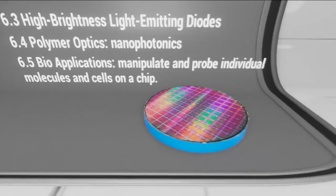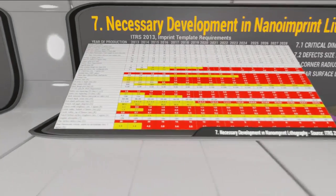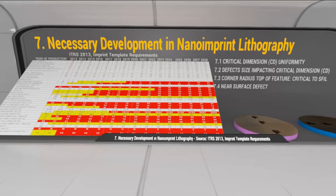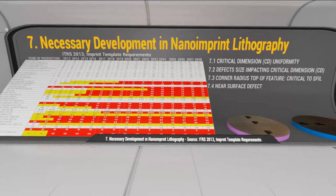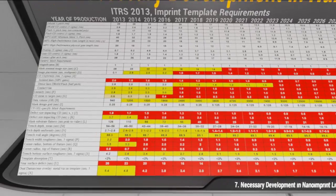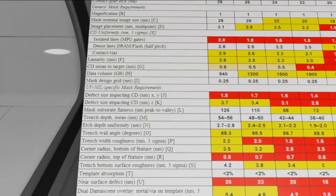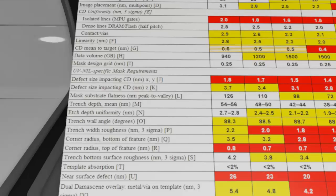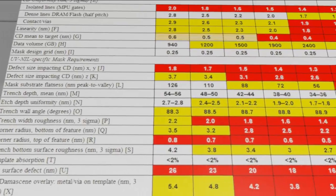Now we will move on to necessary development. We can see this table from the International Technology Roadmap for Semiconductors about imprinting template requirements. In red are manufacturable solutions not yet known. For the next tiers, we need to improve aspects of critical dimension uniformity, defect size impacting critical dimension, corner radius at the top of the feature — which is critical to the field — and near-surface defects, which is the maximum defect size of the quartz substrate from the surface level to a depth of 200 nanometers.